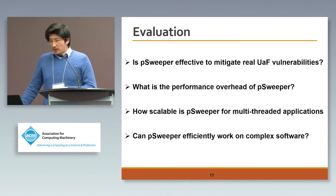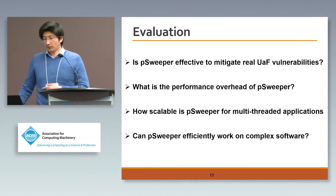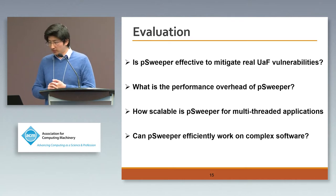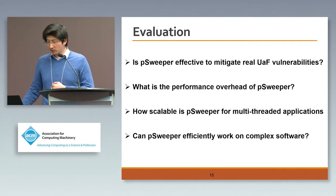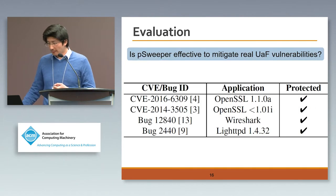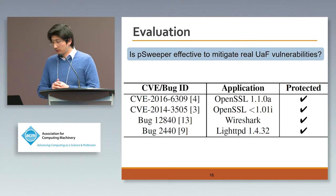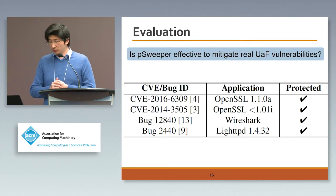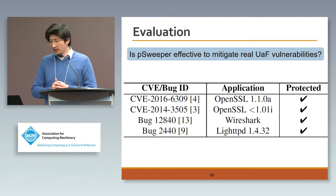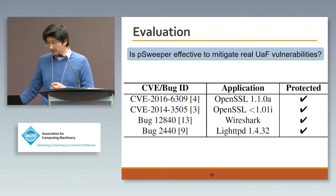We come to the evaluation answering four questions: whether we effectively mitigate UAF vulnerabilities, whether we have good performance, whether we can scale to multi-threading applications, and whether we can work on complex software. We tested using two CVE examples and showed results on two bugs — one in Wireshark and one in lighttpd. PSweeper can prevent all of them.